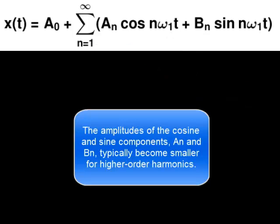The amplitudes of the cosine and sine components, AN and BN, typically become smaller for higher-order harmonics.